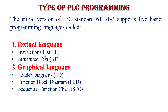There are two types of textual language: first is IL (Instruction List) and second is ST (Structured Text). There are three types of graphical language: first is Ladder Logic Diagram, second is Functional Block Diagram (FBD), and third is Sequential Function Chart. So in total there are five basic programming languages used in PLC programming.